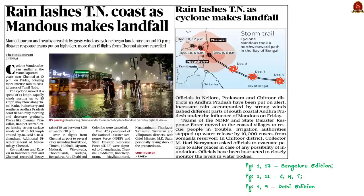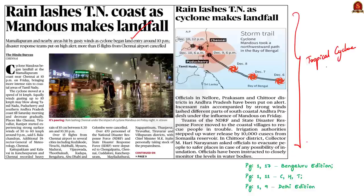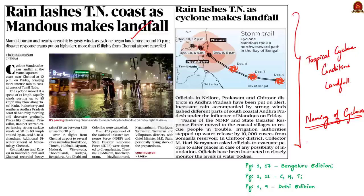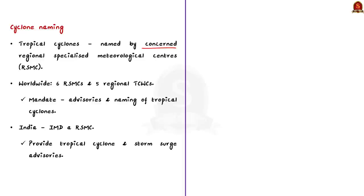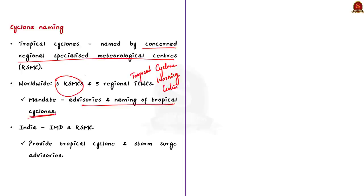Now we concentrate on how cyclones are named. Tropical cyclones forming over different ocean basins are named by the concerned Regional Specialized Meteorological Centers (RSMCs). Worldwide, there are six RSMCs and five Regional Tropical Cyclone Warning Centers (TCWCs), mandated for issuing advisories and naming tropical cyclones. India's Indian Meteorological Department is one of the six RSMCs, providing tropical cyclone and storm surge advisories to 13 member countries under the World Meteorological Organization.